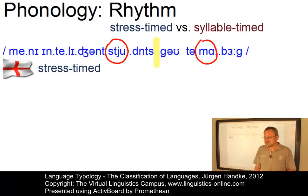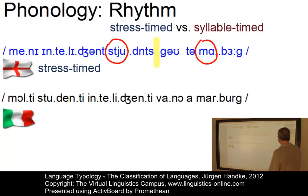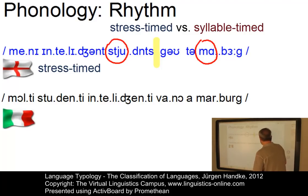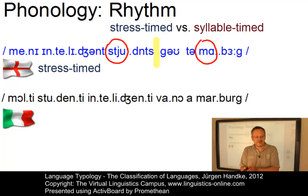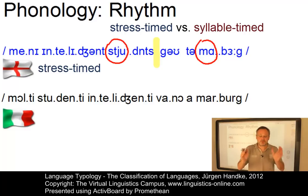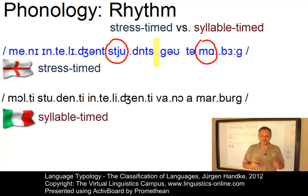This can be contrasted with Italian. The direct translation of the sentence into Italian is 'Molti studenti intelligenti vanno a Marburg.' If you listen carefully, you will find that here there is a tendency for every syllable to be heard as lasting approximately the same amount of time. So Italian is syllable-timed.